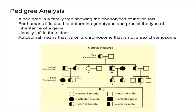In this video I'm going to talk about pedigrees and explain what they are. A pedigree is essentially just a family tree that shows the phenotypes of individuals. This can be done in humans as well as other animals, but in humans pedigrees are generally used to determine the individual genotypes of a person.